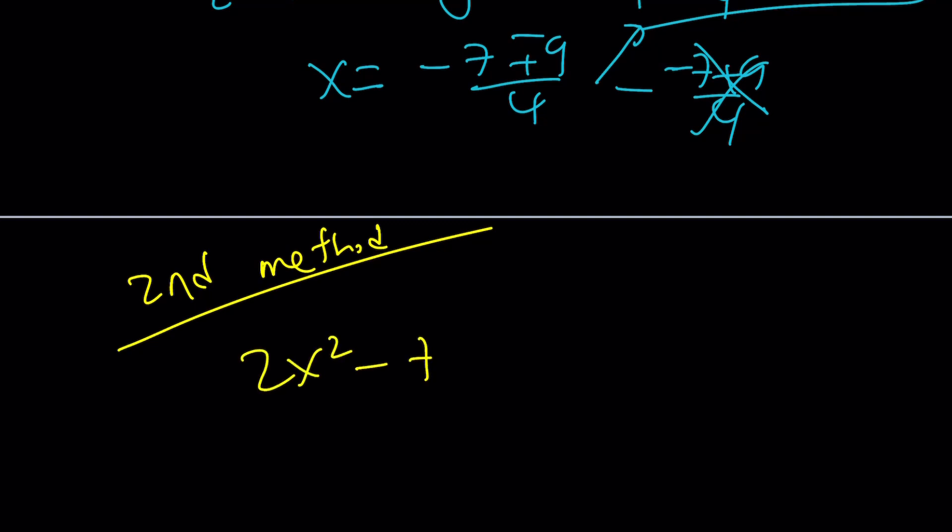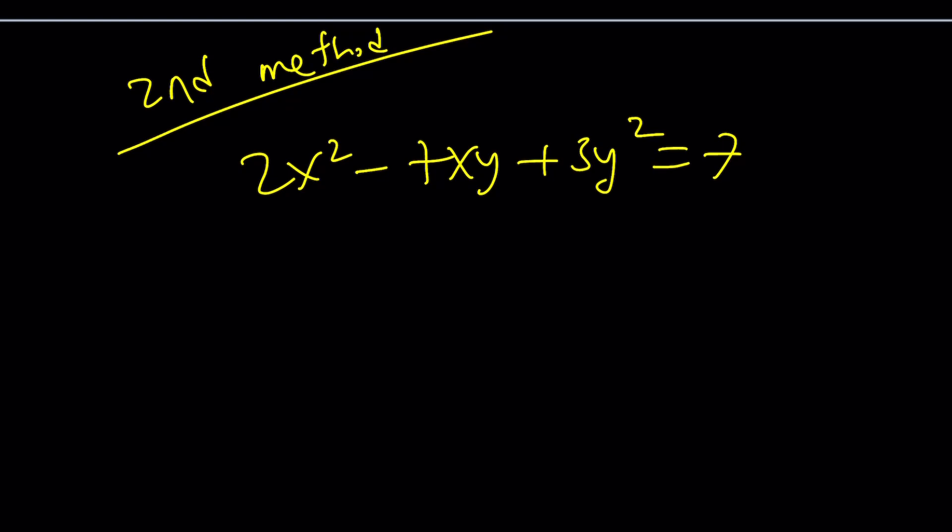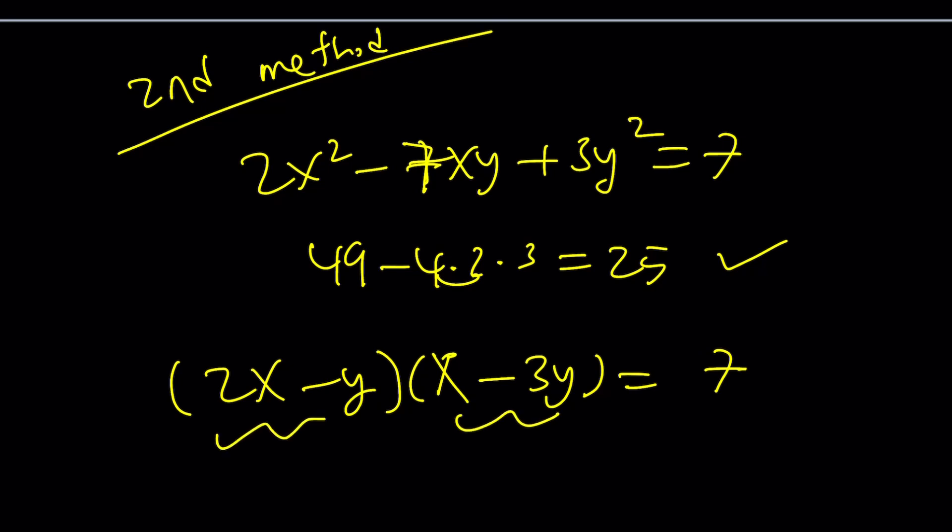So we have 2x² - 7xy + 3y² = 7. And here's what we're going to do for the second method. We're going to try to factor the quadratic on the left-hand side without putting the 7 on the left-hand side. So this is actually factorable, and you can find out if you divide both sides by y², and then call x over y something, and look at the discriminant that way. So the discriminant is basically going to be 49 - 4 times 2 times 3, which is 49 - 24, which is 25. So that's a perfect square, and that's perfect. So basically, the idea is factoring this as 2x - y and x - 3y. That should work. And then you're going to be looking at factors of 7 and getting all the solutions from here.